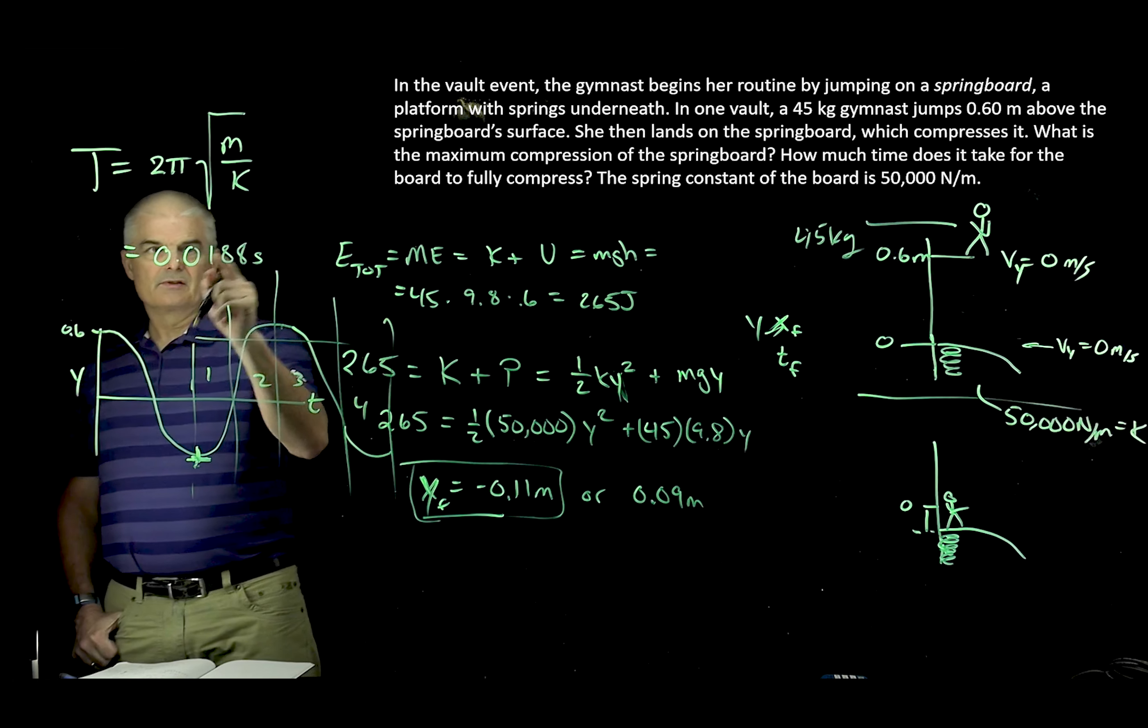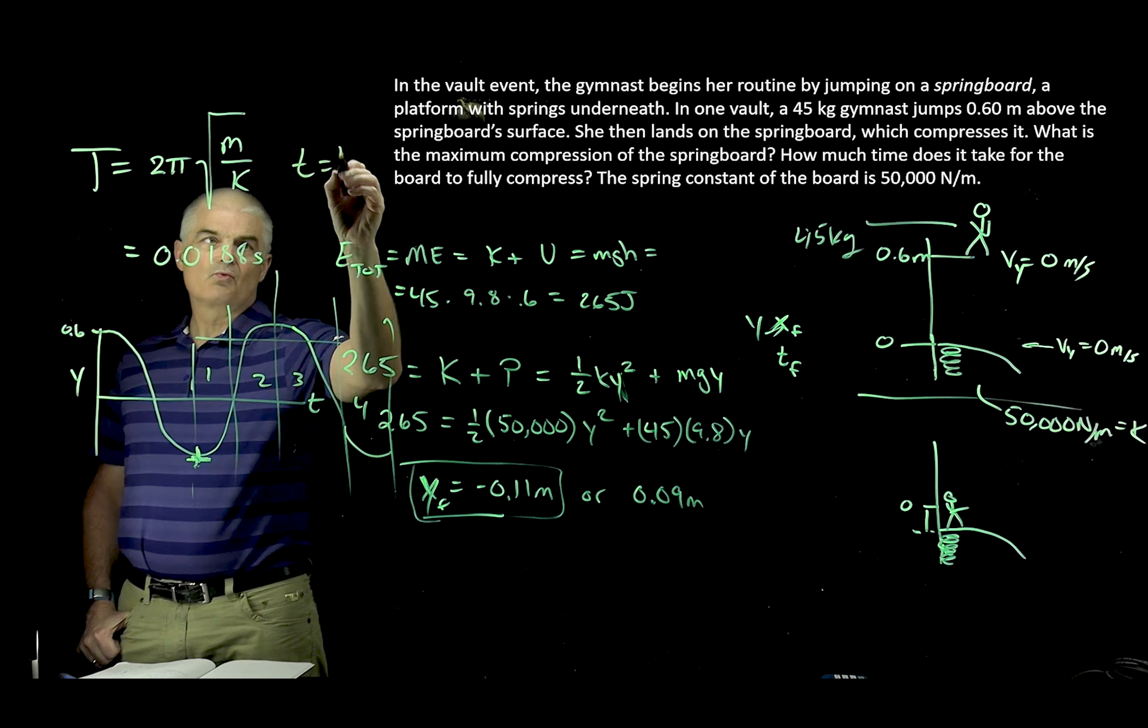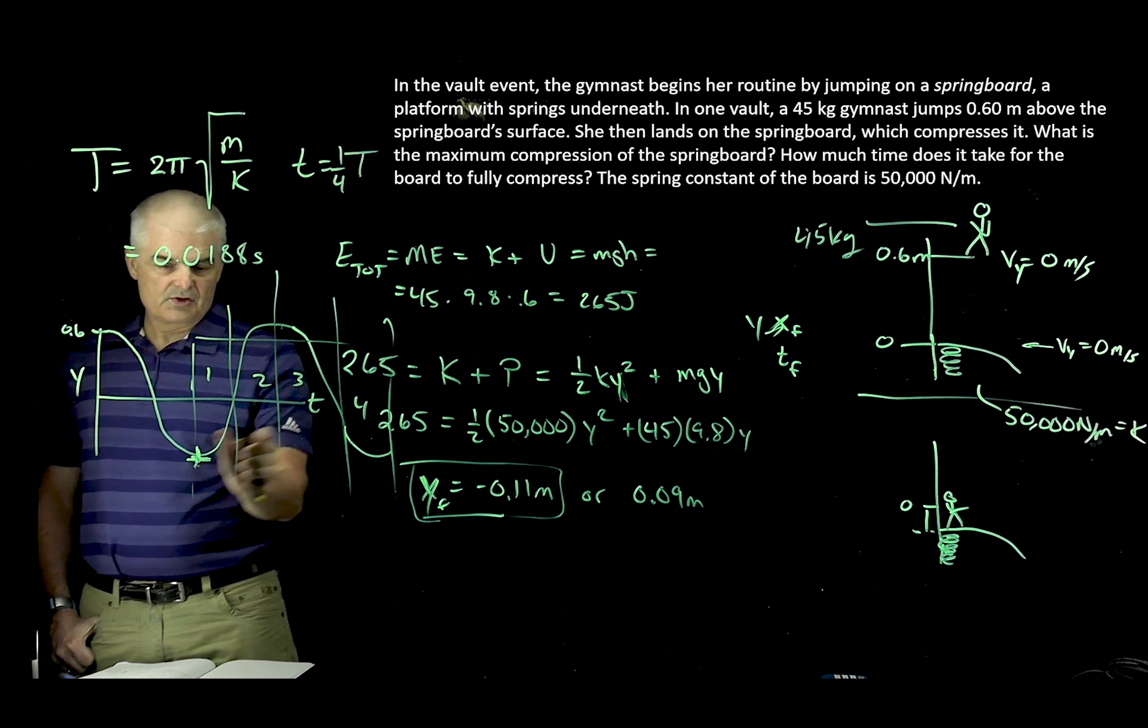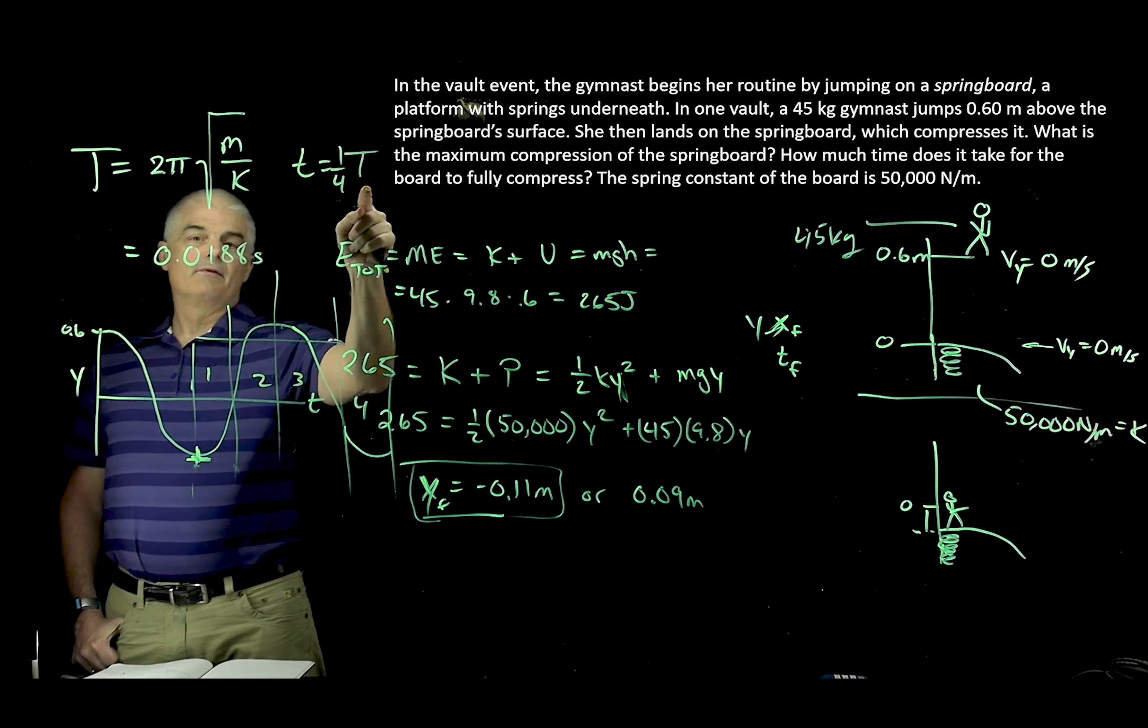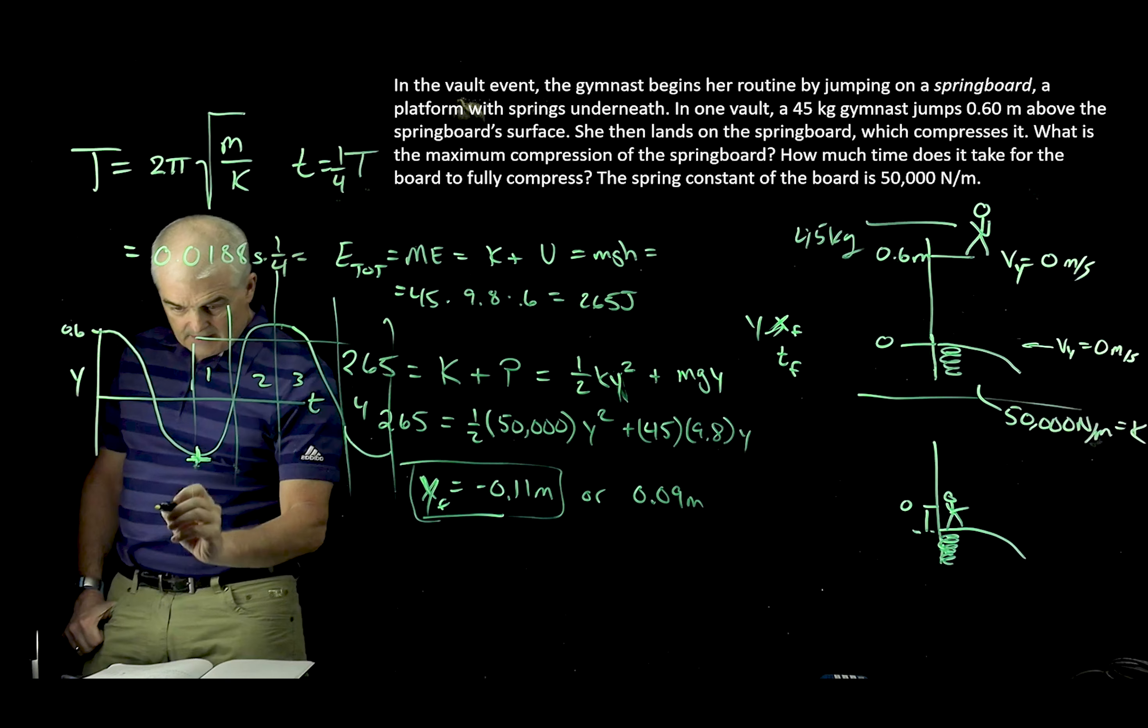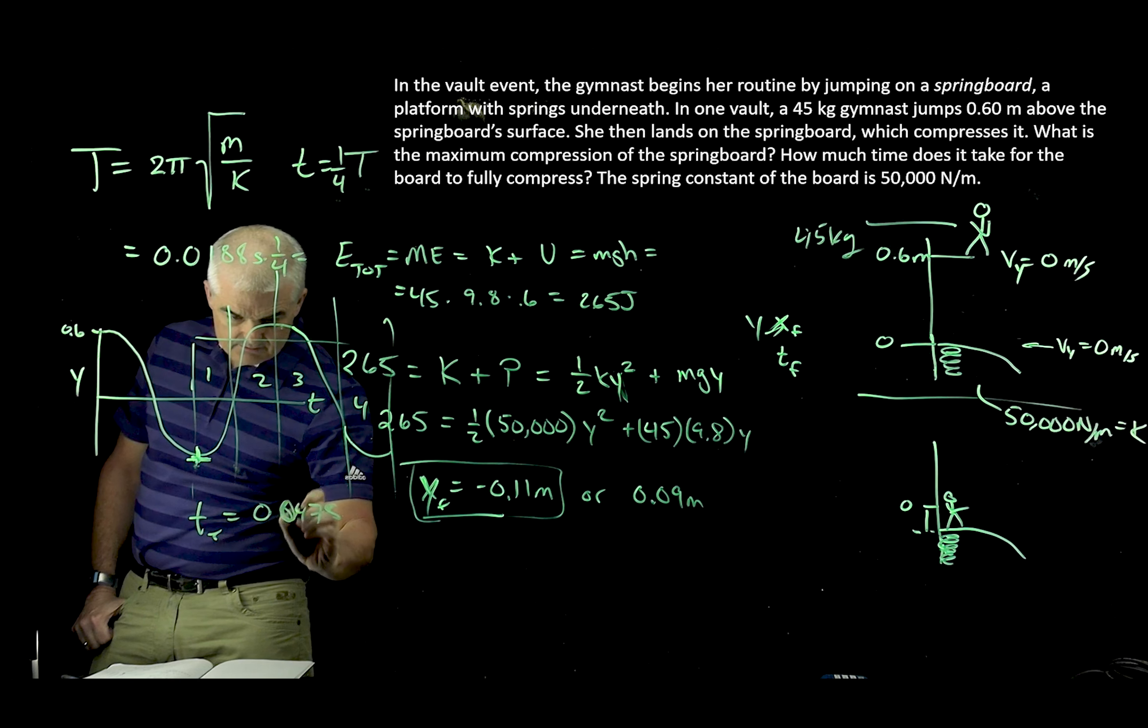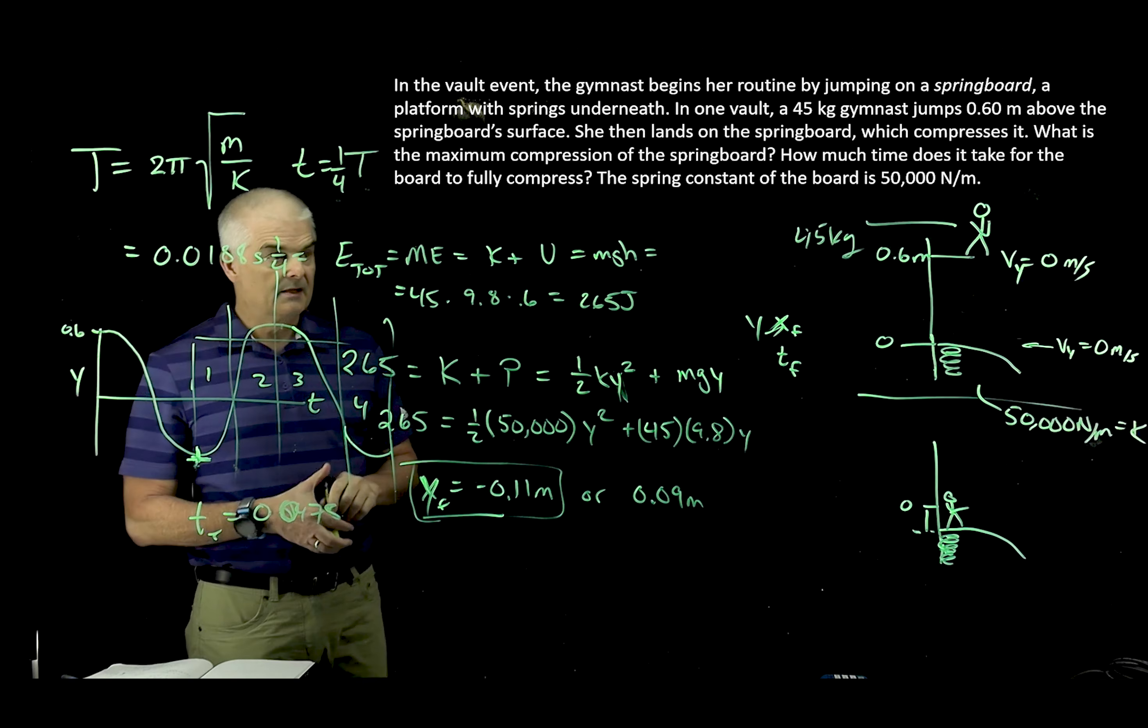So the answer to this, the time that's going to take to do this, is one-fourth of the period. Because if you break it into fourths, she is here at one-fourth the time. So one-fourth time, I just take this times one-fourth, and I get even a smaller number. I get the t final to be 0.047 seconds. And it's just a fourth of 0.018.